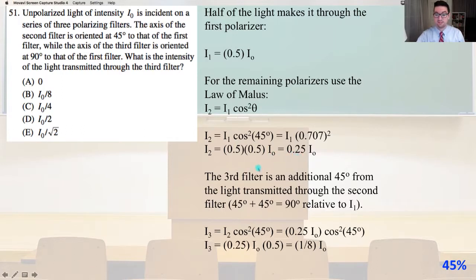The third filter is an additional 45 degrees from the light transmitted through the second filter. 45 degrees plus 45 degrees equals 90 degrees relative to I₁. So I₃ equals I₂ cosine squared of 45 degrees equals 0.25 I₀ times cosine squared of 45 degrees. I₃ equals 0.25 times I₀ times 0.5 equals 1/8 I₀. That is answer B.